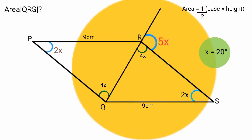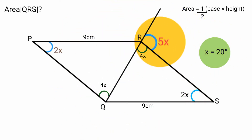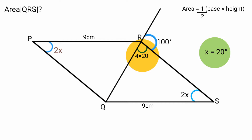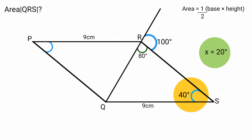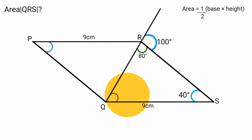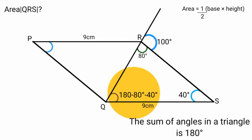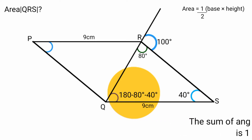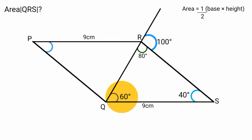Substituting x = 20 degrees: 5x equals 5 times 20 = 100 degrees; 4x equals 4 times 20 = 80 degrees; and 2x equals 2 times 20 = 40 degrees. Since two angles of triangle QRS are 80 degrees and 40 degrees, the third angle equals 180 minus 80 minus 40, which is 60 degrees.